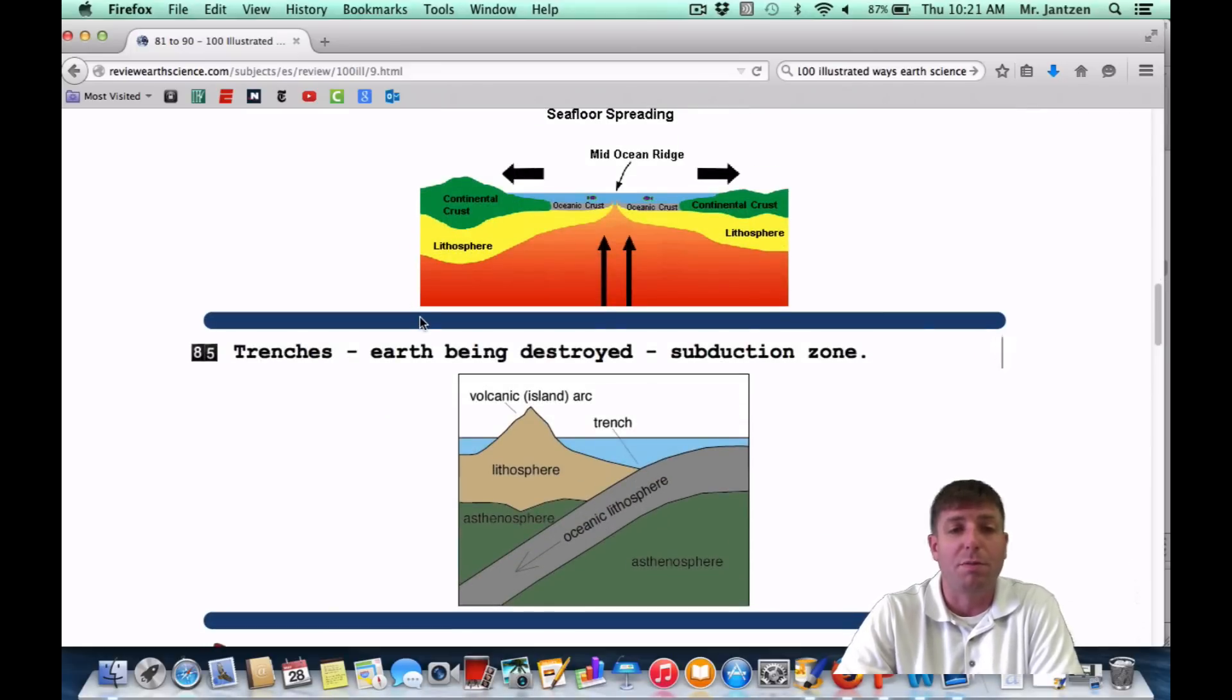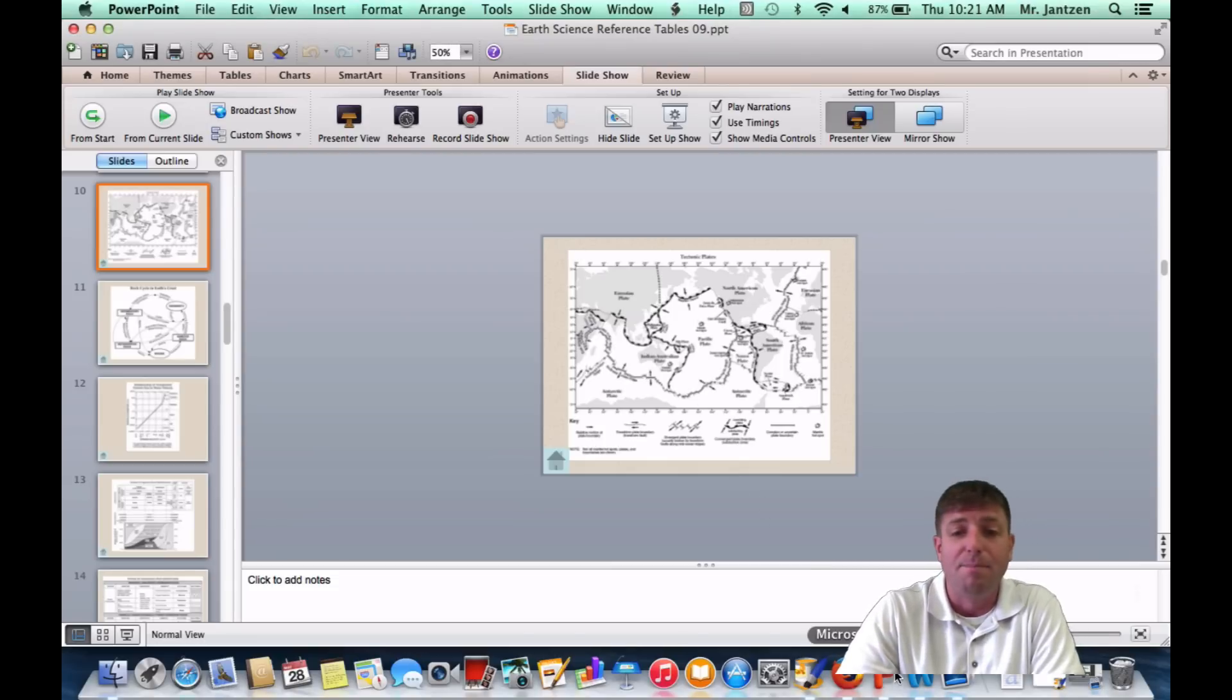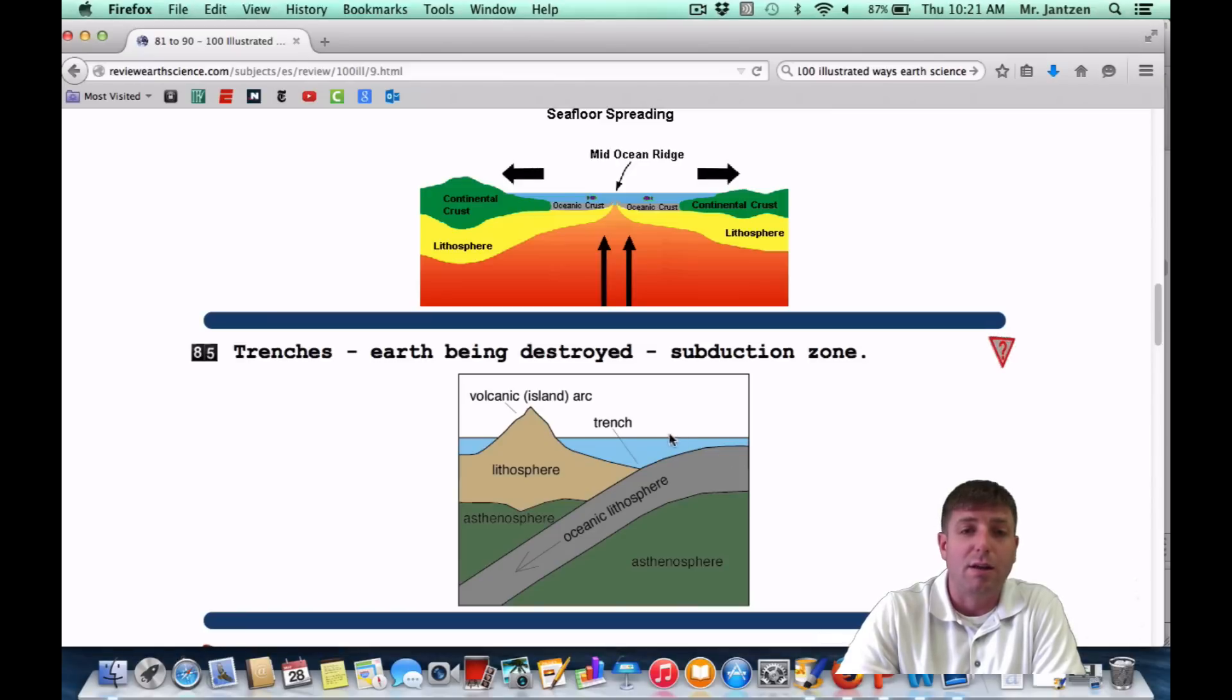Number 85: trenches are where earth is being destroyed at a subduction zone. So this is a convergent boundary. Once again, you can check the same reference table chart. And you can see, once again, that anywhere you have these blocks, these thick blocks, it's a convergent boundary that the crust is coming together. And you can see that that's going to be associated with a subduction zone.